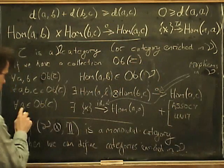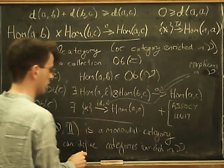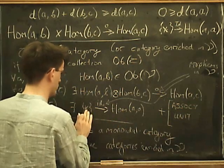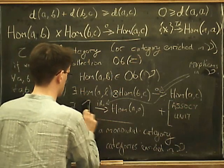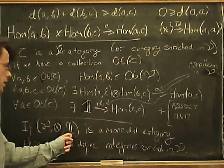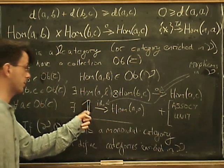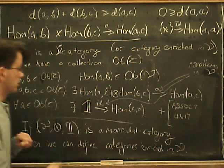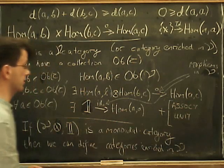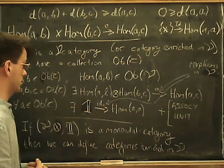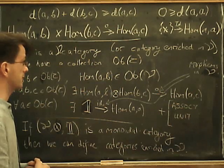And similarly, we want something similar to the identity, but we don't have the one element set. What do we have? We have the tensor unit. So the role of that was played by the one object set in the category of Set, the one element object in Set.